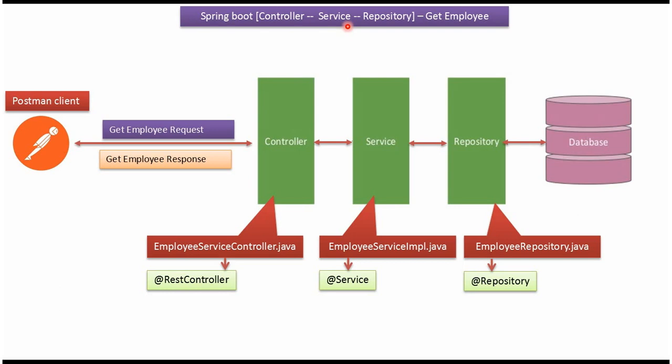In this video tutorial I will explain how to get an employee record using layered architecture and JDBC template. Here you can see three different layers: the first one is the controller layer, the second one is the service layer, and the third one is the repository layer.